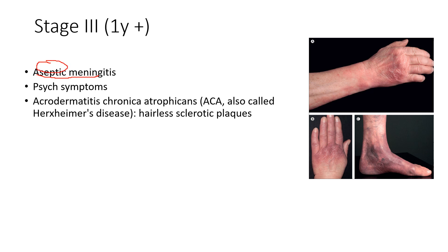In stage three, meningitis can occur but is aseptic — no organisms are found, it's a residual inflammation persisting for a long time. Psychotic symptoms can develop as well, such as bipolar disorder and depression, affecting mental health. The brain and spinal cord — the central nervous system — represent the final frontier for Lyme. A late-stage skin manifestation called acrodermatitis chronica atrophicans can appear, presenting as dark, hairless patches of skin affected by Lyme disease.